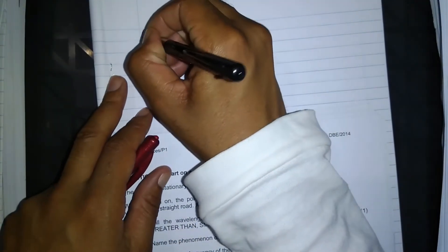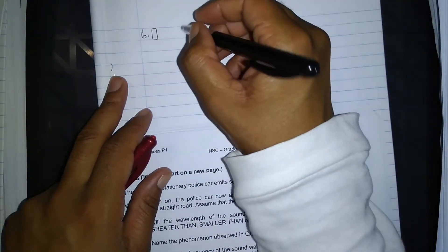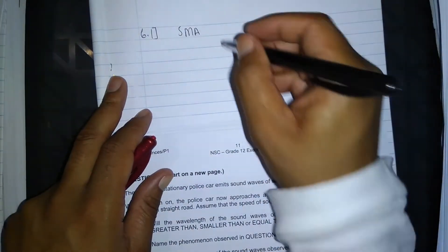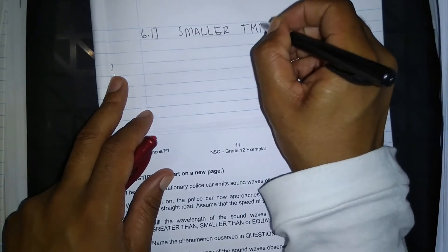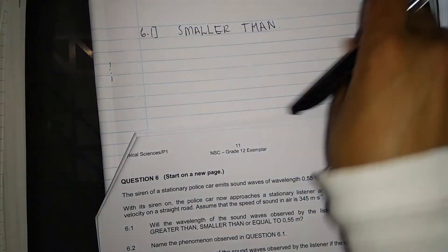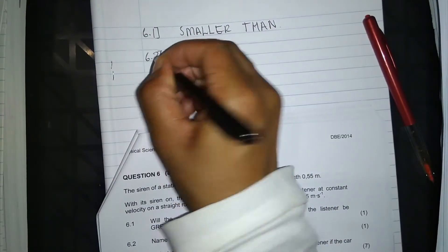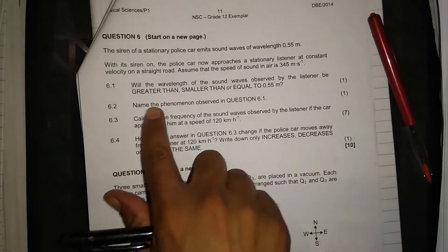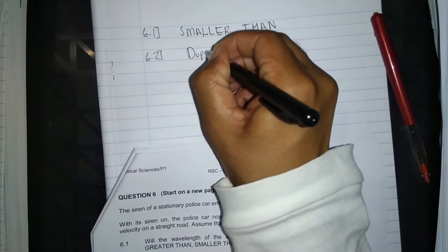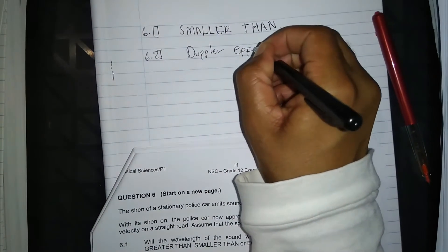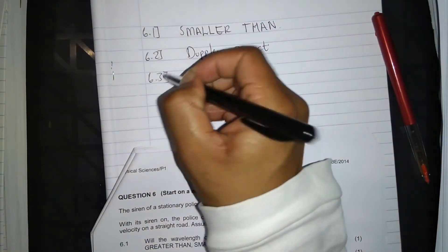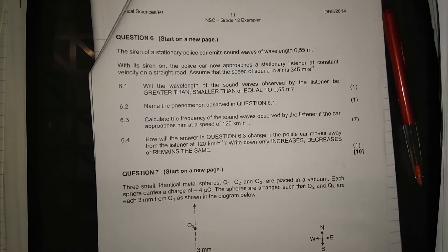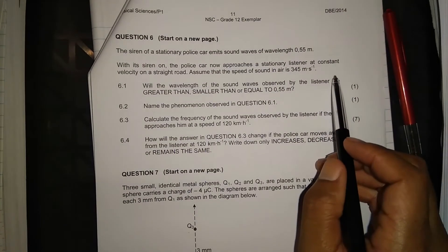The answer to 6.1 is: the wavelength will be smaller than 0.55 meters. Question 6.2: name the phenomenon observed in 6.1. This is the Doppler effect. We should also be able to define it, which is also important.